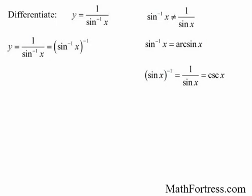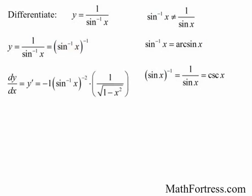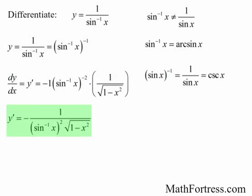Now that we have a differentiable-friendly form, we take the derivative using a combination of the power rule and the chain rule. The outer function is x raised to the power of negative 1, and the inner function is inverse sine. So y prime is going to be equal to negative 1 times sine inverse raised to the power of negative 2, times 1 over the square root of 1 minus x squared. Simplifying, the final derivative is equal to negative 1 over sine inverse squared times the square root of 1 minus x squared.